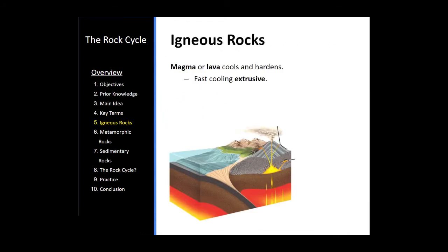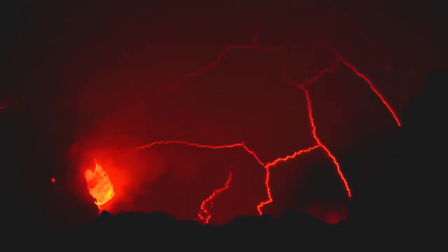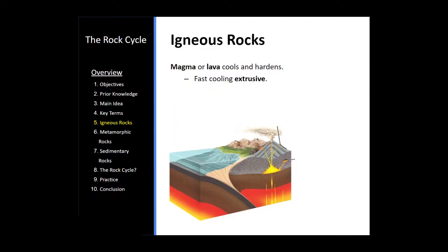Let's start with igneous rocks. It's a great place to start. Basically, lava can erupt out of a volcano and cool down and harden into stone. Now, when melted rock reaches the surface, it's called lava. But if melted rock is below the surface, it's called magma.